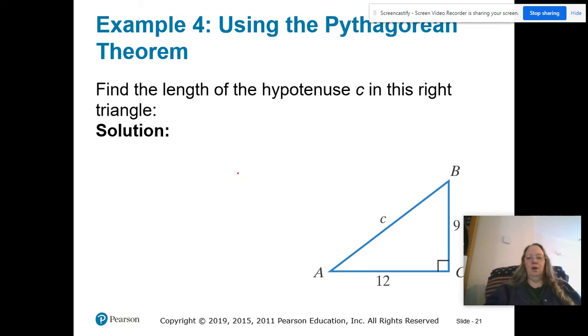So we know the two legs. So this is nine, this is 12. It doesn't matter which leg you start with, as long as these are both legs and the hypotenuse is on the other side of the equal sign. So it has to equal the hypotenuse squared. Remember you have to square first. Nine squared is 81. Twelve squared is 144. We're going to add these together and that's 225.